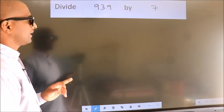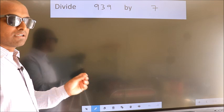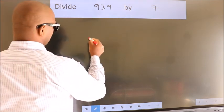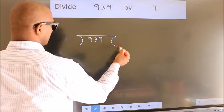Divide 939 by 7. To do this division, we should frame it in this way: 939 here, 7 here.